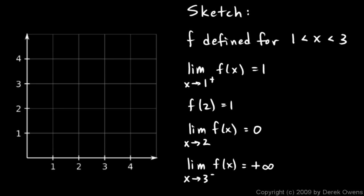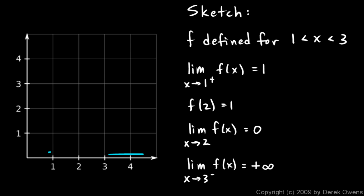Here's one more problem. We're told to sketch a graph of a function with the following characteristics: the function is defined for x between 1 and 3. The limit as x approaches 1 from the right has to be 1. The value of the function at 2 has to be 1. But the limit as x approaches 2 is 0, and the limit as x approaches 3 from the left is positive infinity. Let's start with something easy — f of 2 equals 1, so that point has to be on the function.